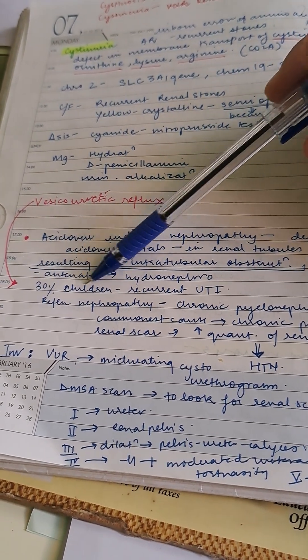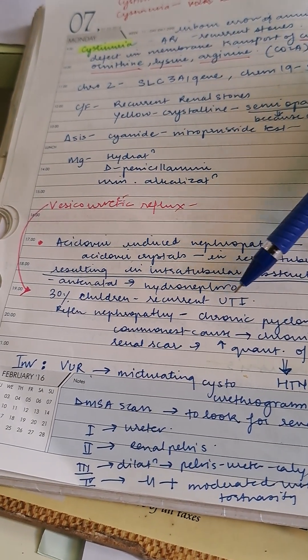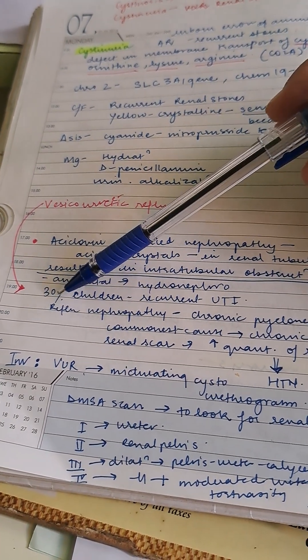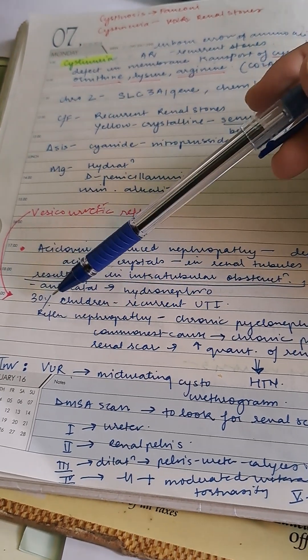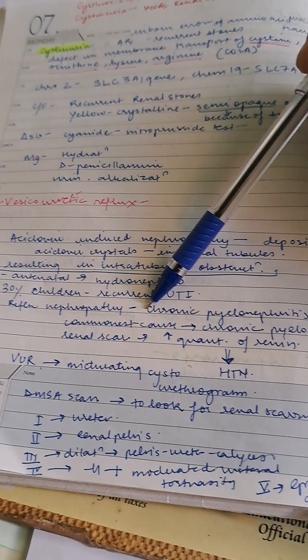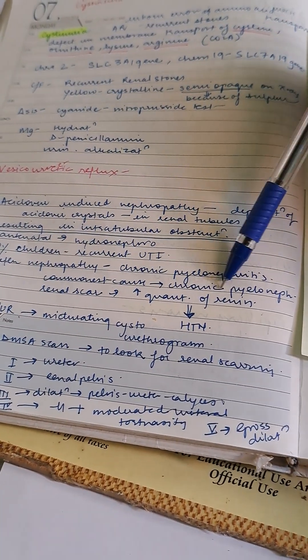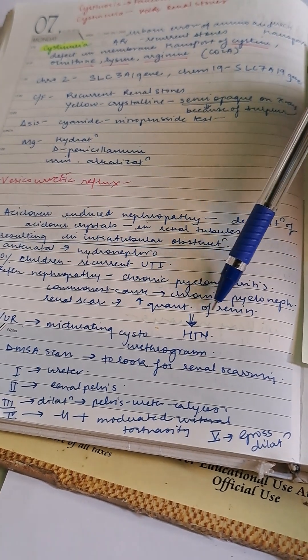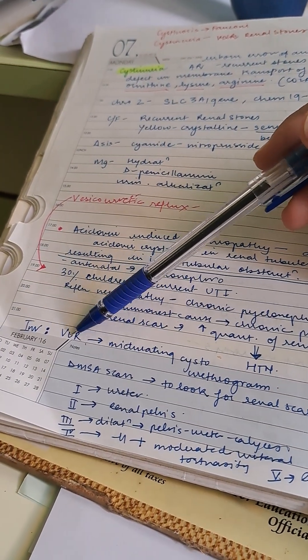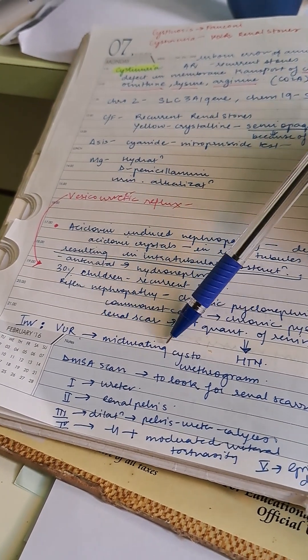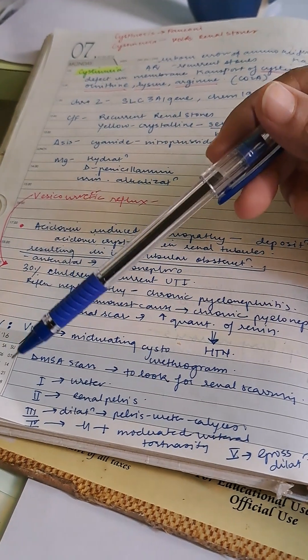Vesicoureteric reflux is antenatal and causes hydronephrosis, detectable on antenatal abdominal USG of the mother. 30% of children have recurrent UTIs. This causes reflux nephropathy—chronic pyelonephritis is the commonest cause, leading to renal scars that increase renin quantity and cause hypertension. Investigation includes micturating cystourethrogram and DMSA scan to look for renal scarring.